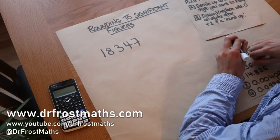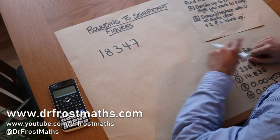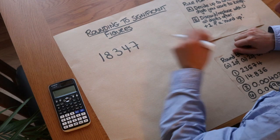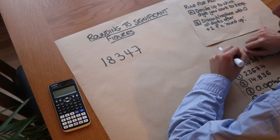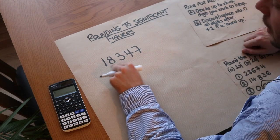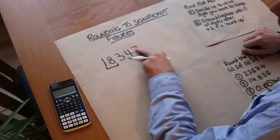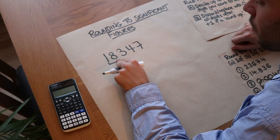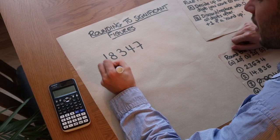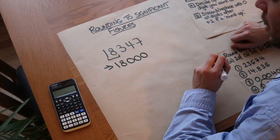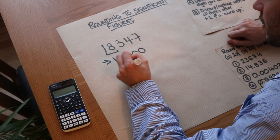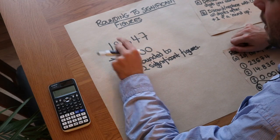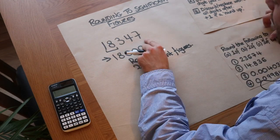Hello and welcome to this video on rounding to two significant figures. Let's say you're attending a football match and in the stadium there are 18,347 people and someone asks how many people were there. You would say maybe 18,000. So you're keeping the first two digits and discarding the rest to give less detail. We say we're rounding that to two significant figures, which means we're keeping the first two digits and wiping everything else out.